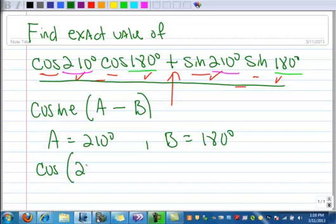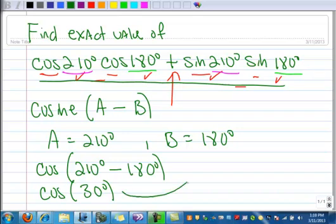And then I can figure it out: 210 minus 180, well, that's 30 degrees. I'm running out of room, let's move over here. Now I look at my unit circle, and the cosine of 30 degrees is square root of 3 over 2.